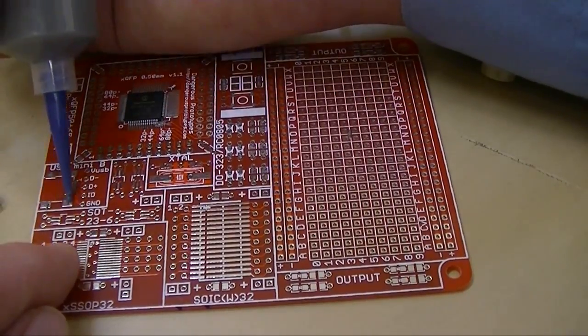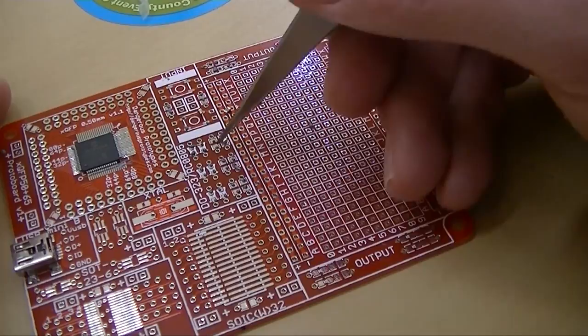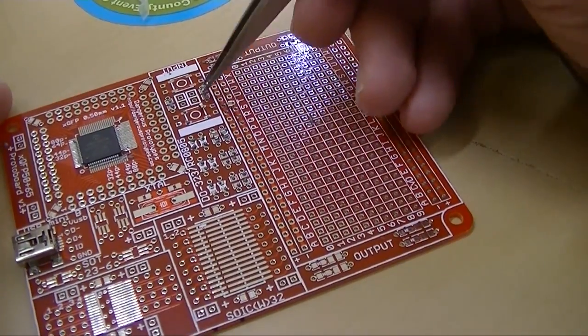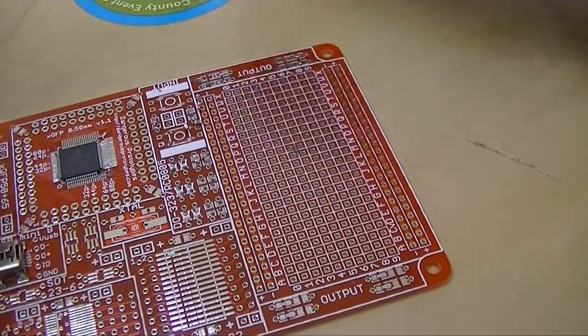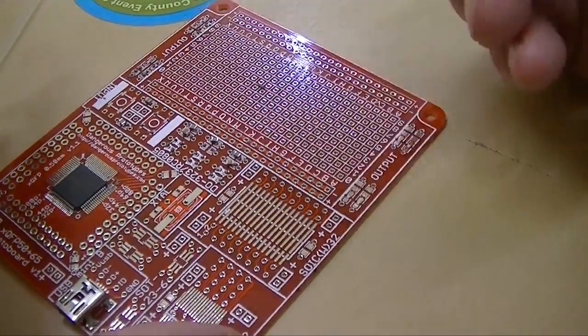This is our QFP protoboard version 2, which is available at Seed Studio for about ten dollars, I believe. We use these in the workshop, the prototype projects that we don't want to make a custom PCB for yet.